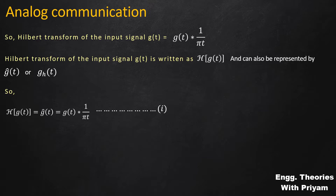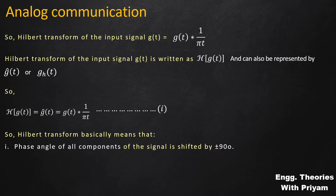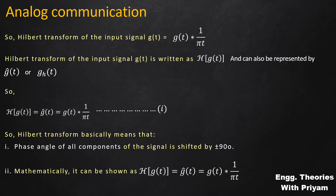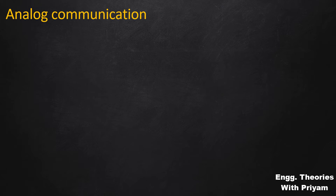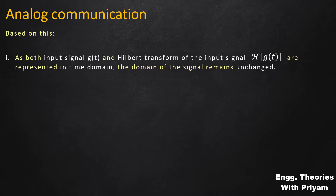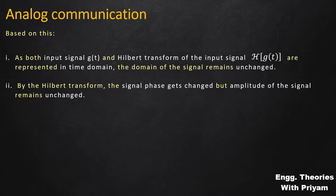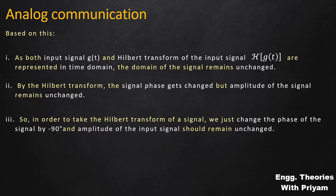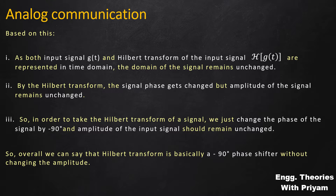This is equation number 1. The Hilbert transform means the phase angle of all components of the signal is shifted by plus or minus 90 degrees, mathematically shown as g(t) convolved with 1/(πt). Both the input signal g(t) and its Hilbert transform are in the time domain, so the domain remains unchanged. The amplitude of the signal also remains unchanged. Overall, the Hilbert transform is a minus 90-degree phase shifter without changing the amplitude.